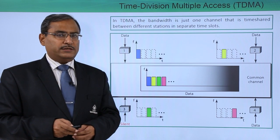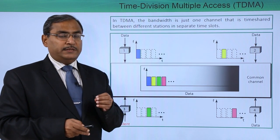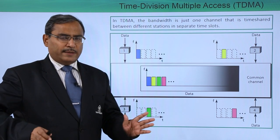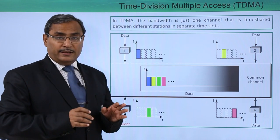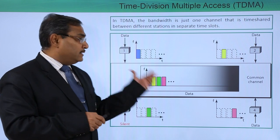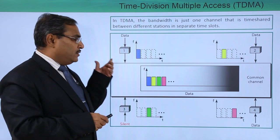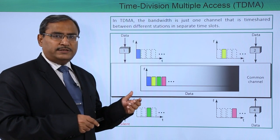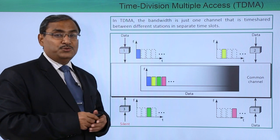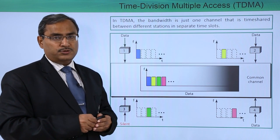In the earlier video we watched FDMA, where all the nodes can transmit their information any time, so there were no time slots. But they could not use the full bandwidth. Here we are doing just the reverse — all nodes are not free to send their message at any time, but they can use the full bandwidth when they are allowed to do so.